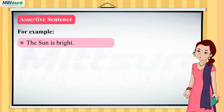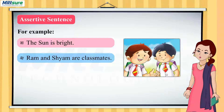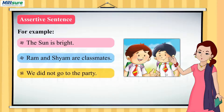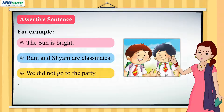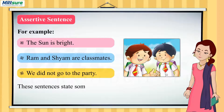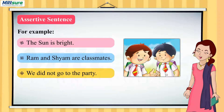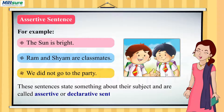For example: the sun is bright. Ram and Sham are classmates. We did not go for the party. These sentences state something about their subject and are called assertive or declarative sentences.